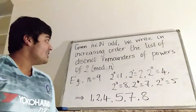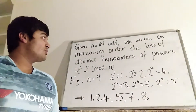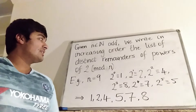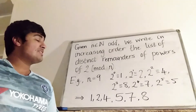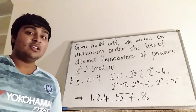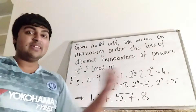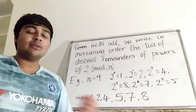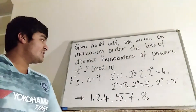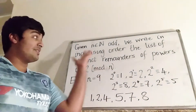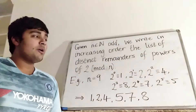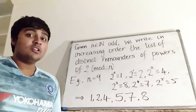This is the problem I have today. Given a natural number n which is odd, we write in increasing order the list of distinct remainders of powers of 2 mod n. So we're given a natural number n which is odd, and then we write this list of numbers which is in order — the distinct remainders of the powers of 2 mod n.